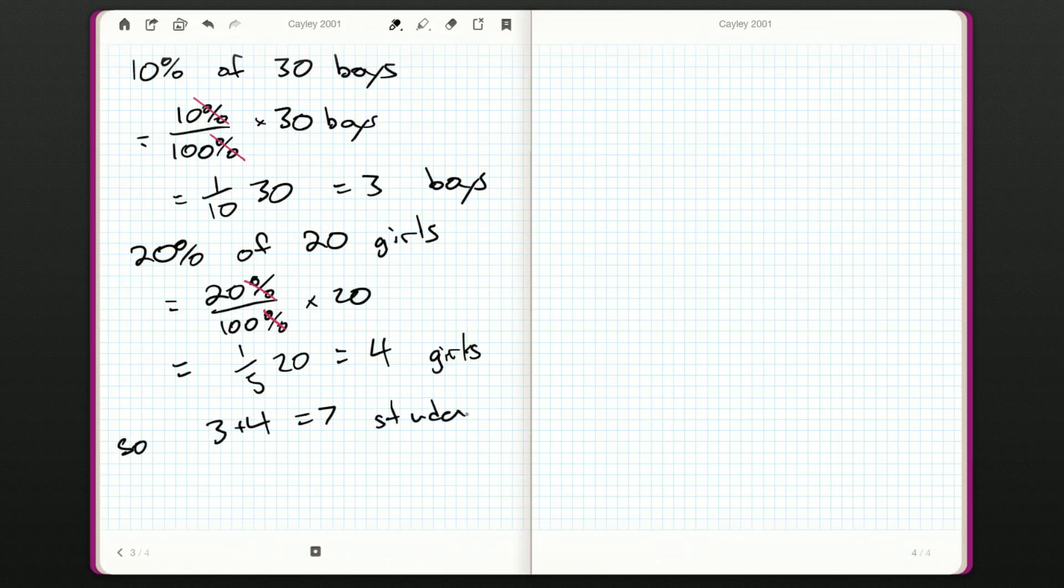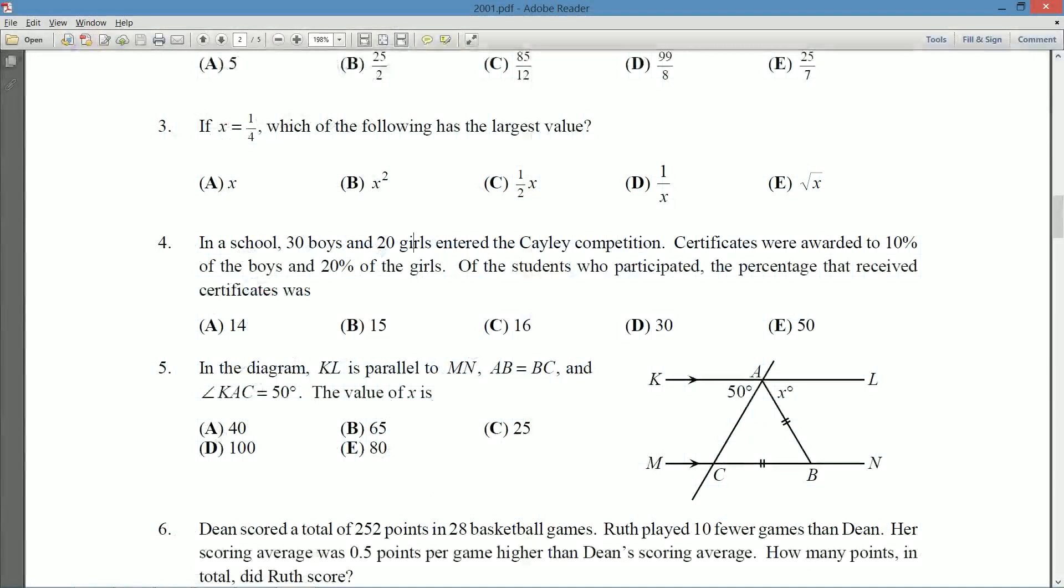So overall, seven students got certificates. So if we want a percentage out of this, well, we turn it into a fraction. Seven out of the 50 students got certificates. We multiply through, we get 14%. 14% of the students got certificates. So the answer is A, 14.